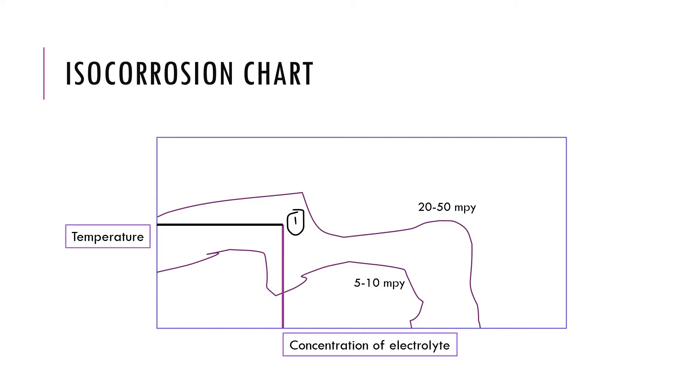Isocorrosion chart is a plot between temperature on the y-axis and concentration of electrolyte on the x-axis. Here you have lines depicting similar corrosion rates, which means that if you have a concentration at about 70 and if you have...